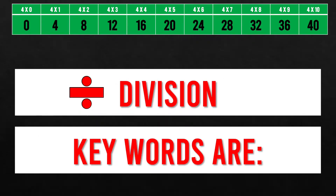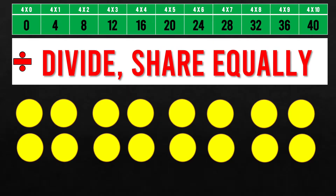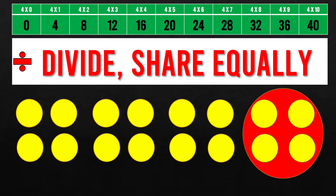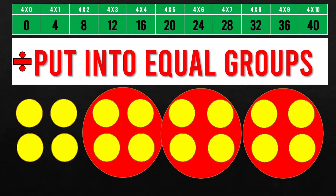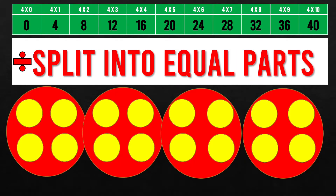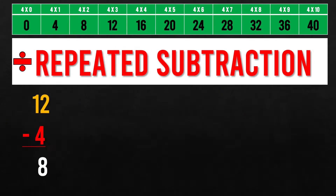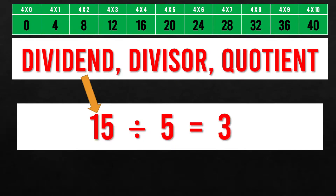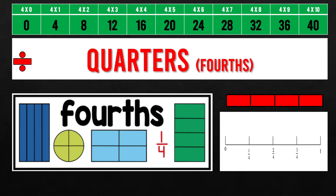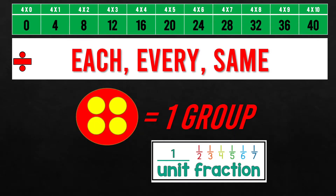Division keywords are: divide, share equally, put into equal groups, split into equal parts. Repeated subtraction, dividend, divisor, quotient, half, thirds, quarters, each, every, same.